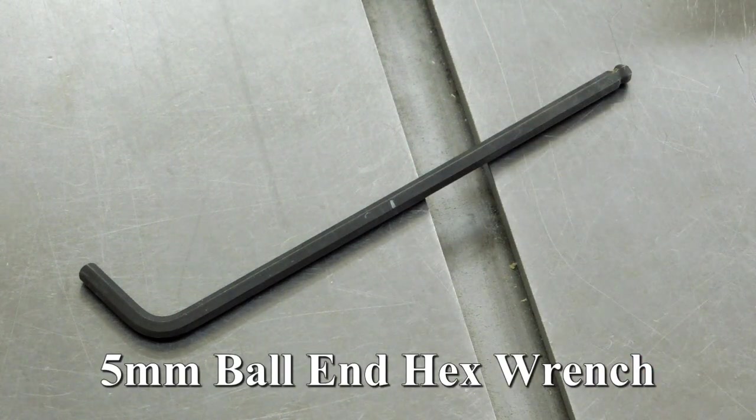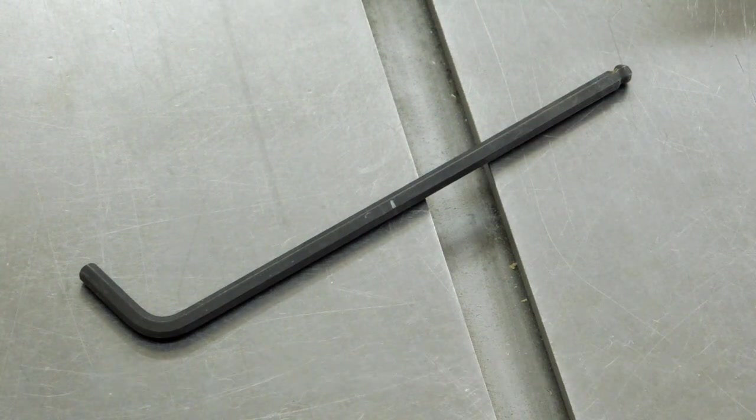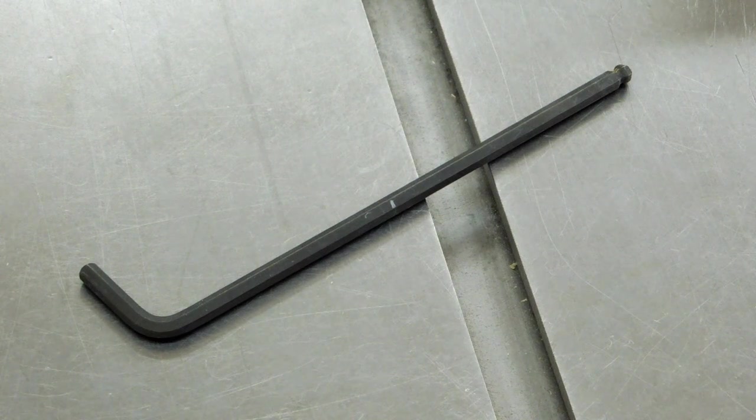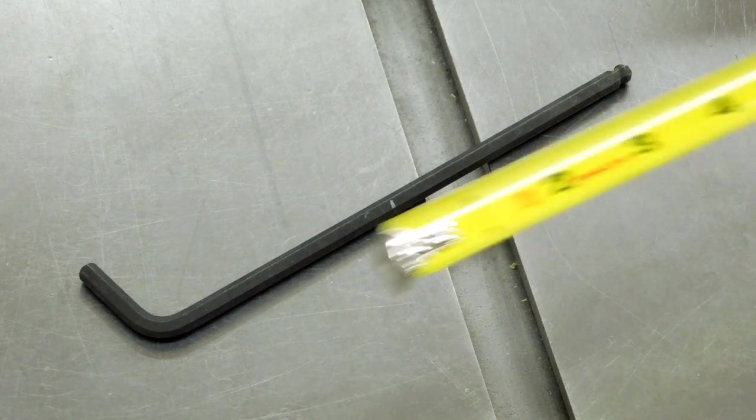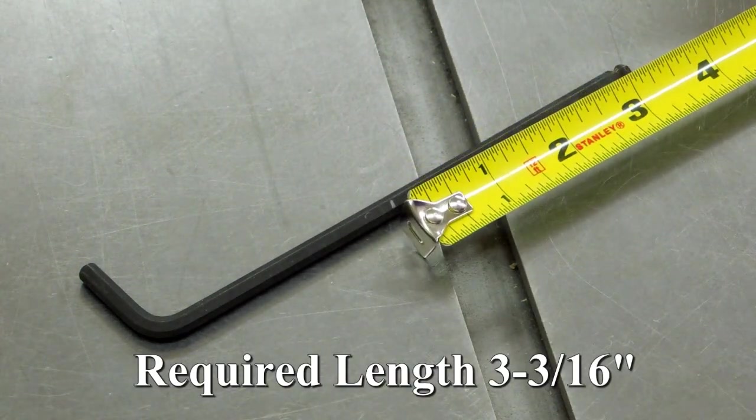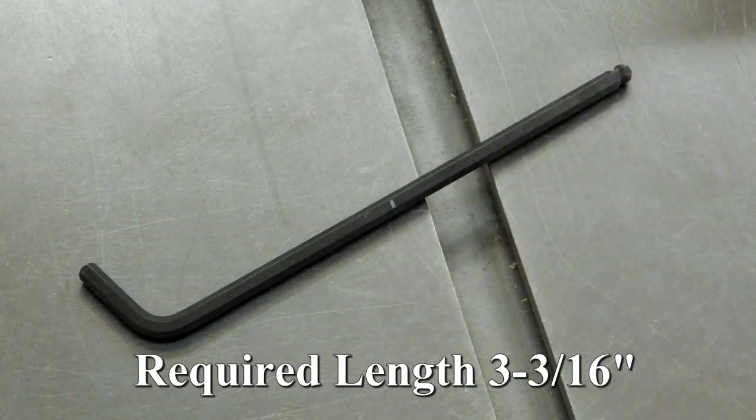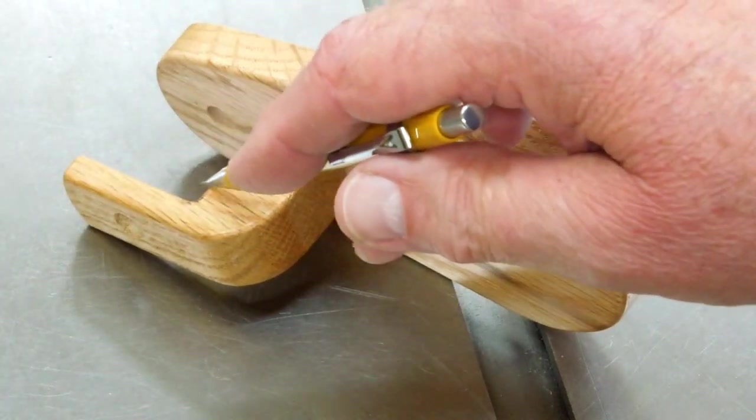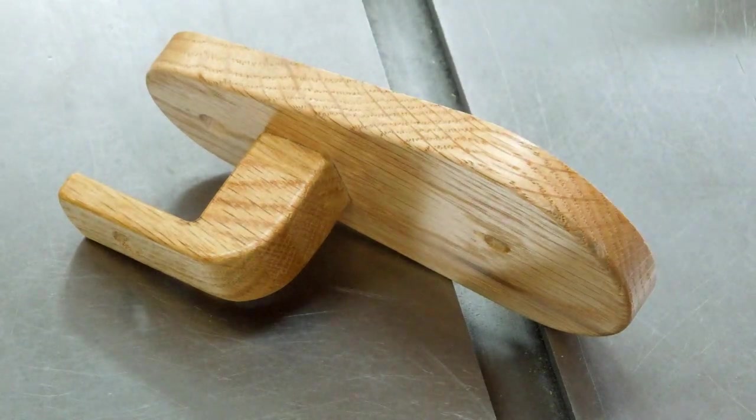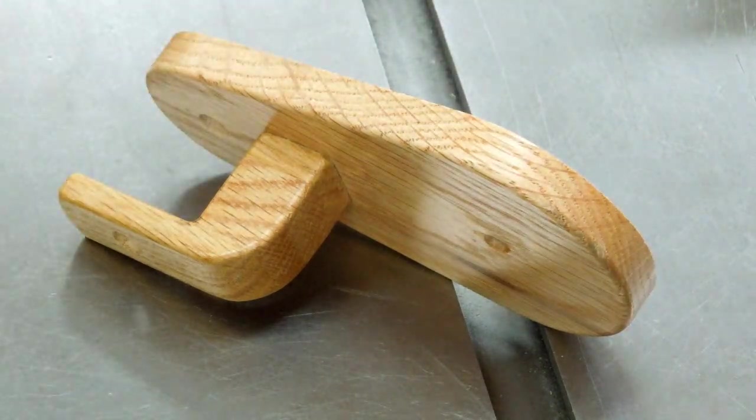You can buy these ball end wrenches individually in different places. No sense breaking up a good set of wrenches. This particular wrench is 6 inches long. We need a straight section that is 3 and 3 sixteenths. I made my offset on the rewind bracket so I have an inch and a quarter clearance in here.